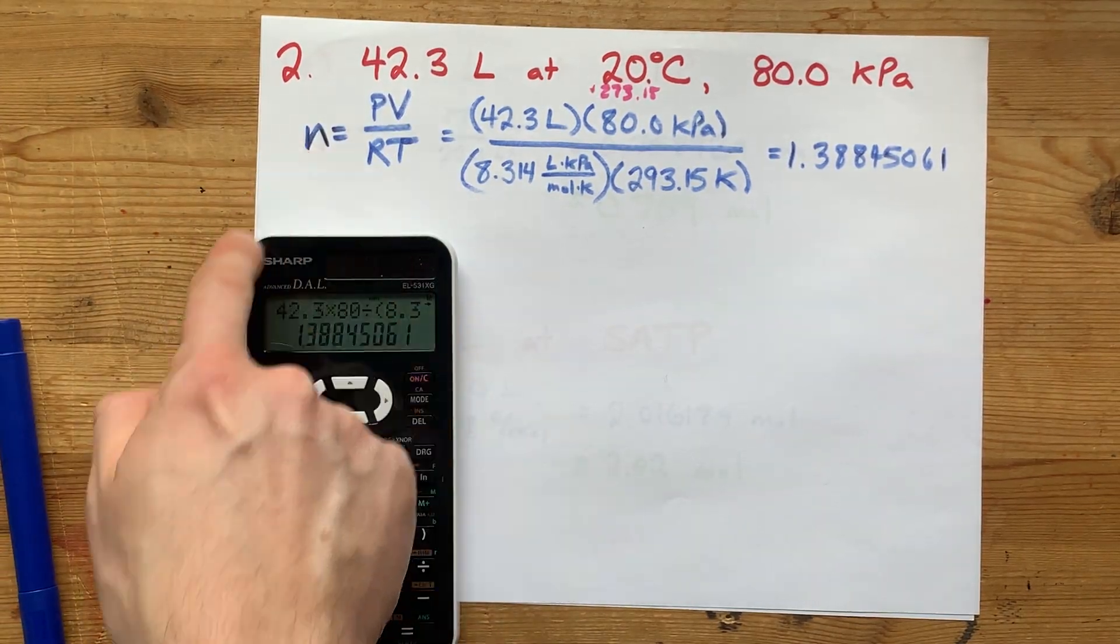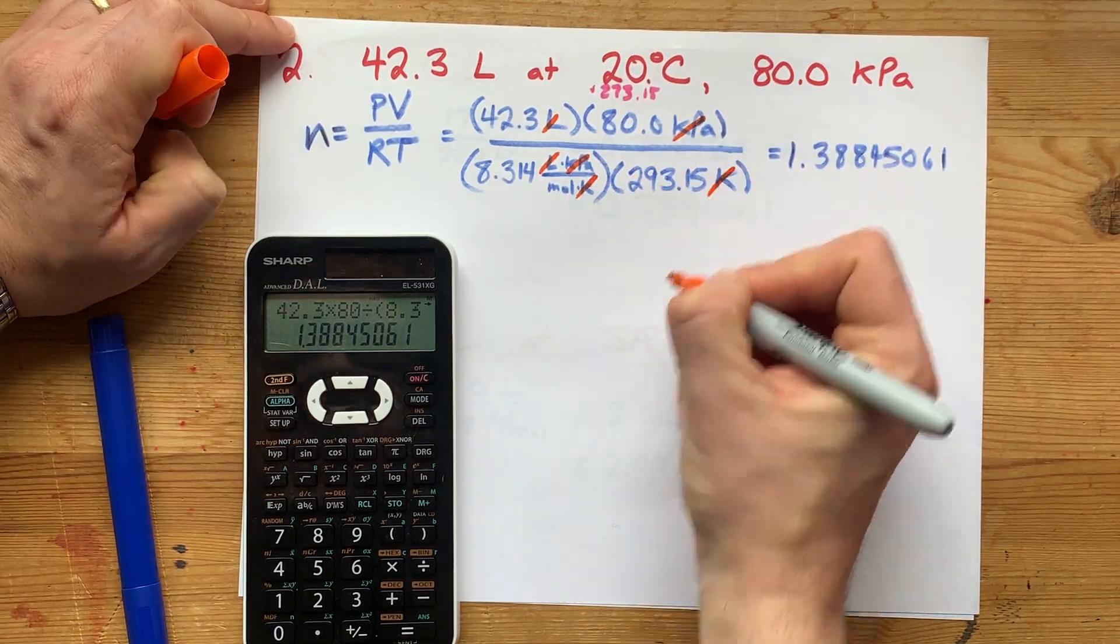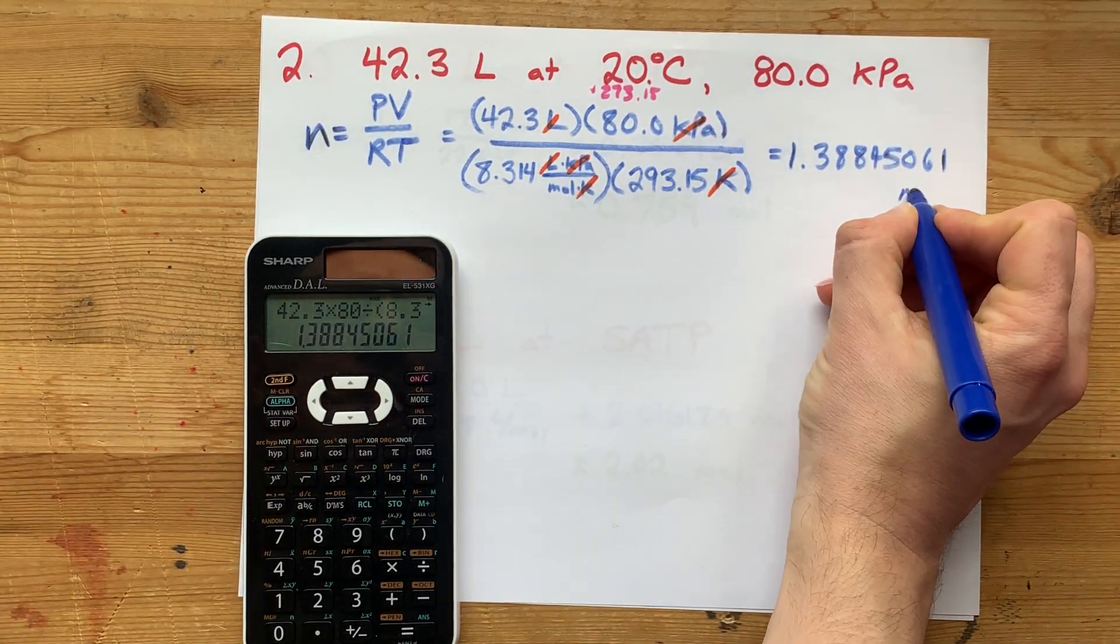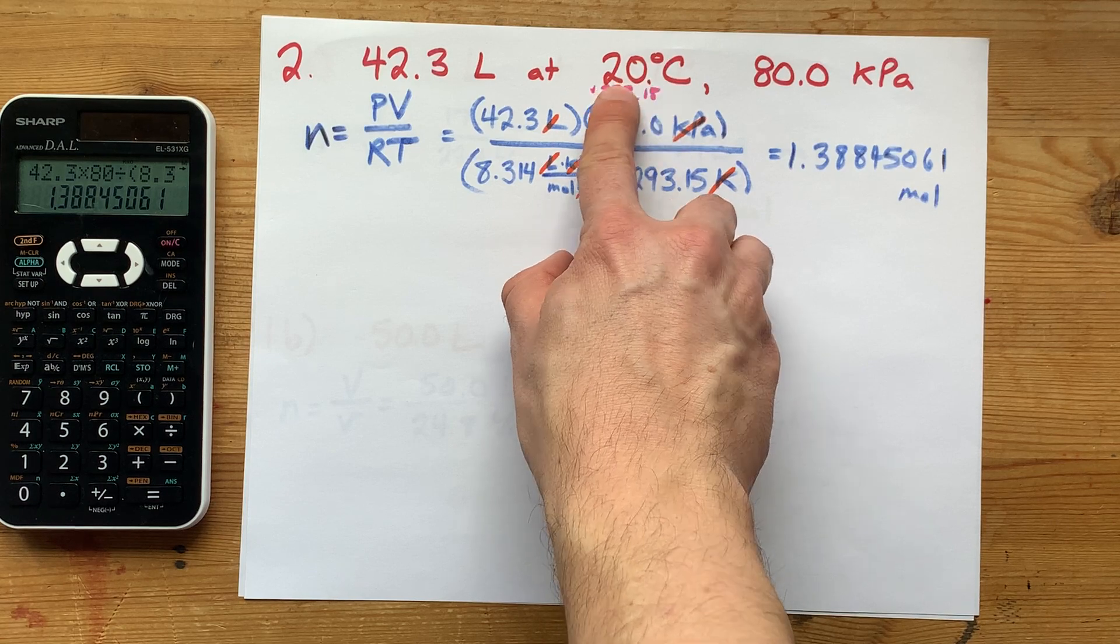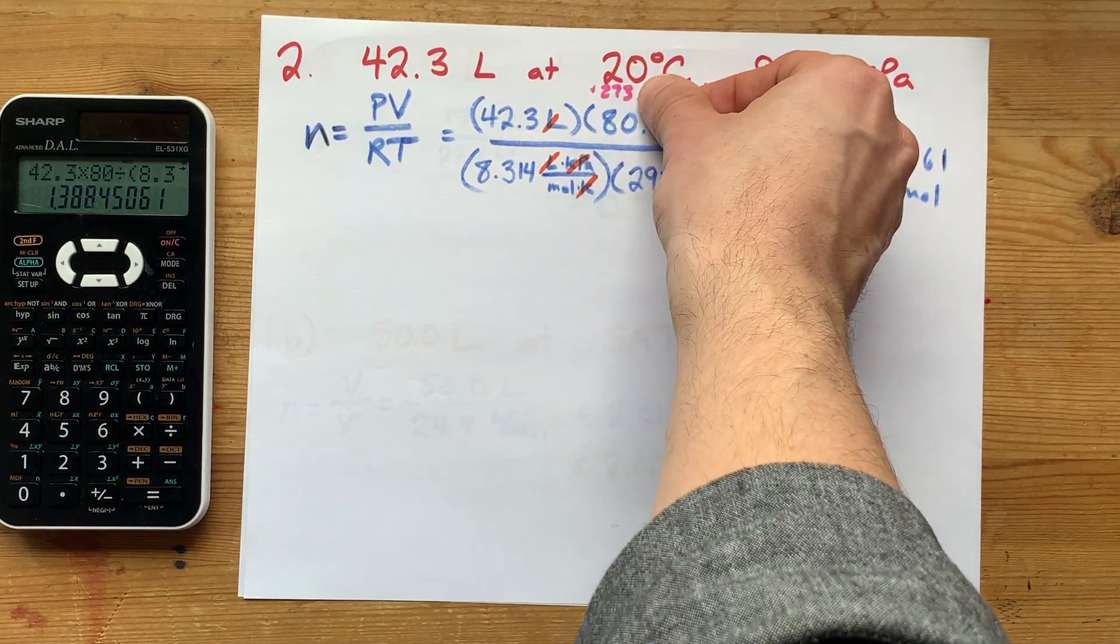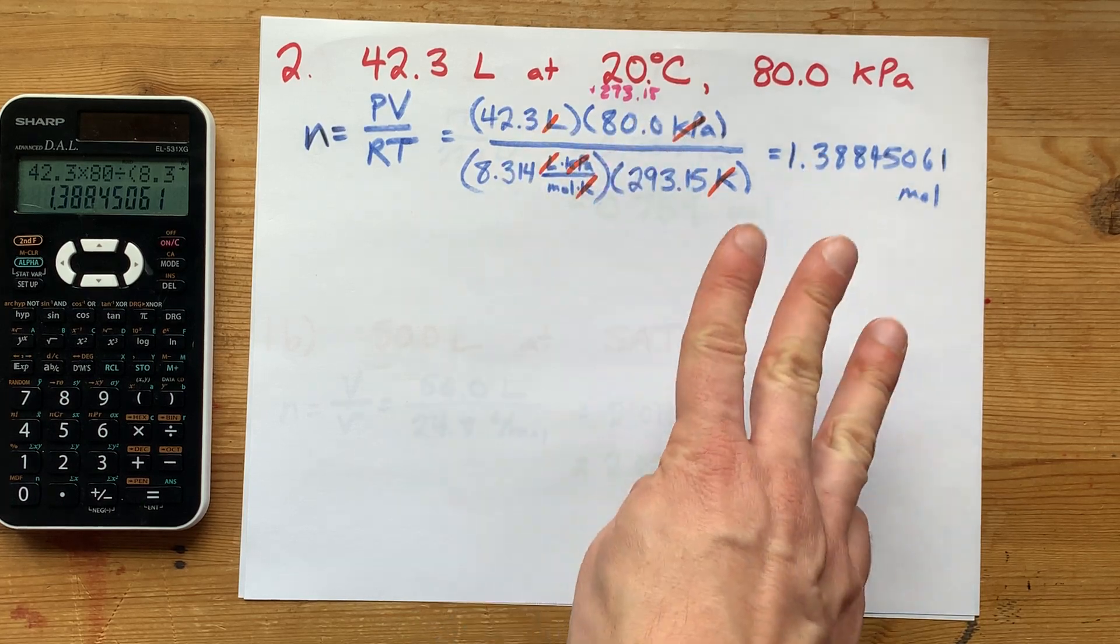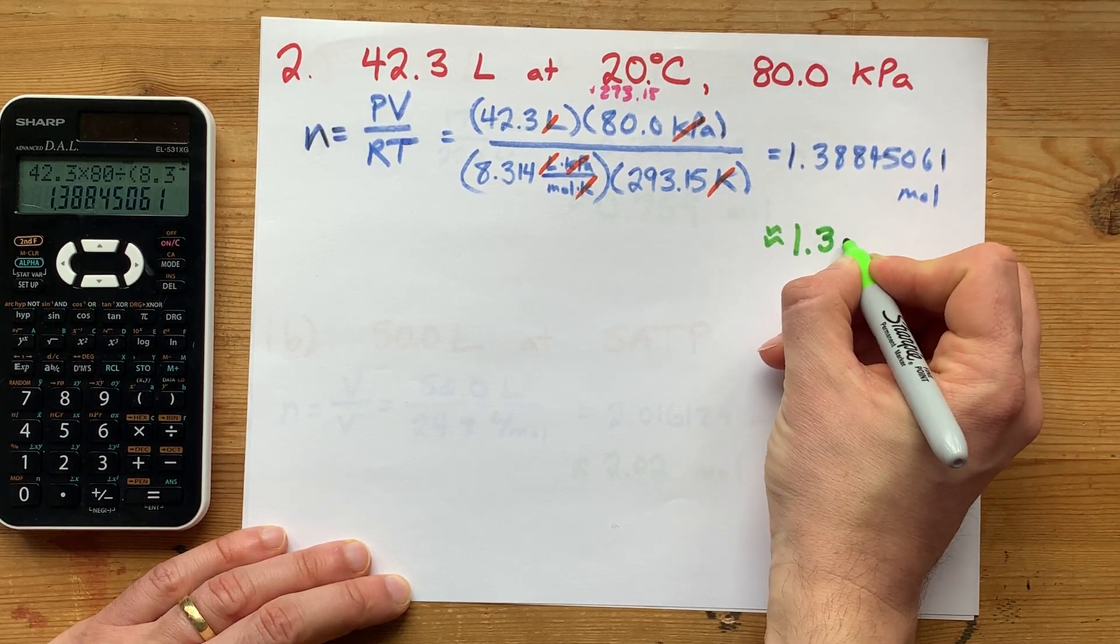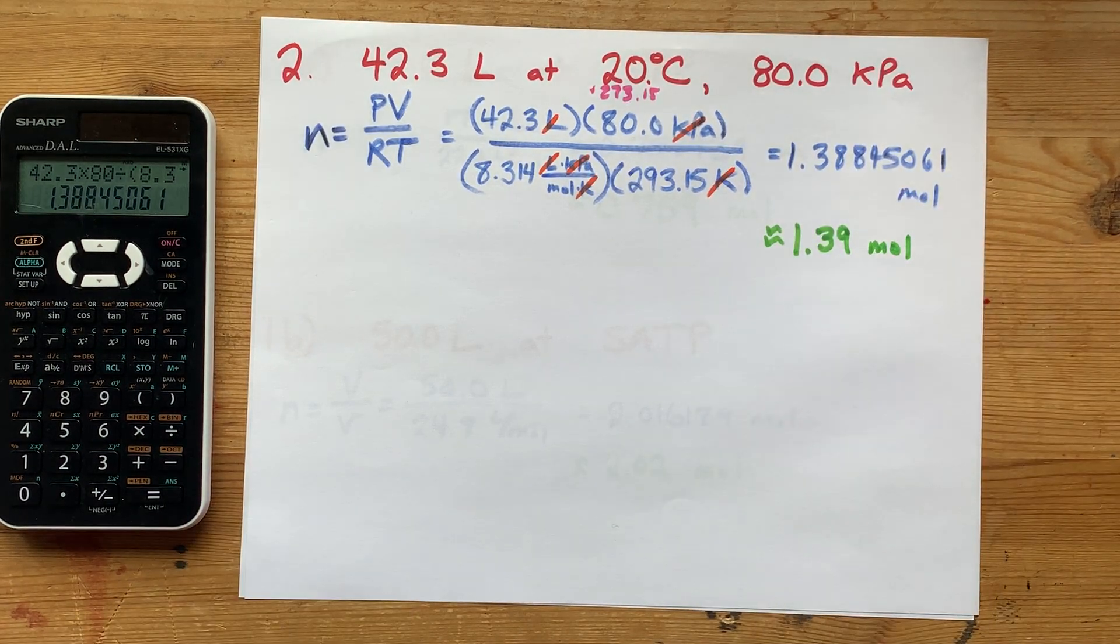The units are moles. Liters cancels, kilopascals cancels, Kelvin cancels, leaving moles. For significant figures, the 20°C had two sig figs, but after adding 273.15 it became three. The volume has four, pressure has three, R has three. So we need three significant figures in the final answer: 1.39 moles.